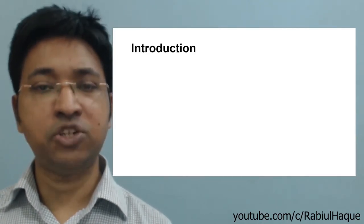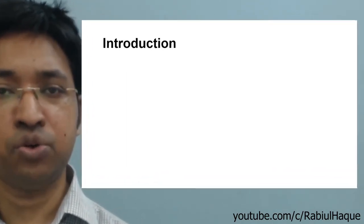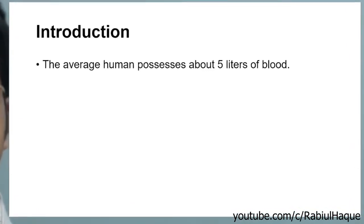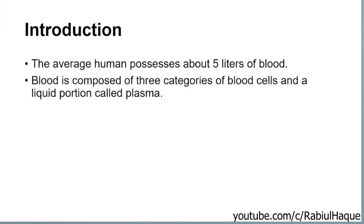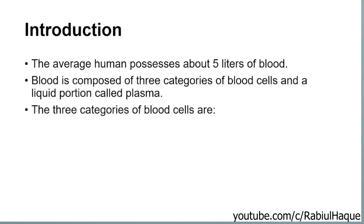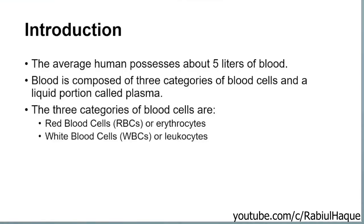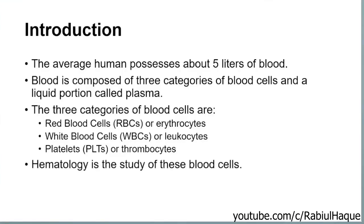We will start by talking about some introductory points. Recall from your physiology classes — the average human possesses about 5 liters of blood. This blood is composed of formed elements or blood cells and a liquid portion known as plasma. Formed elements or blood cells are of three categories: red blood cells or erythrocytes, white blood cells or leukocytes, and platelets, which are also known as thrombocytes.